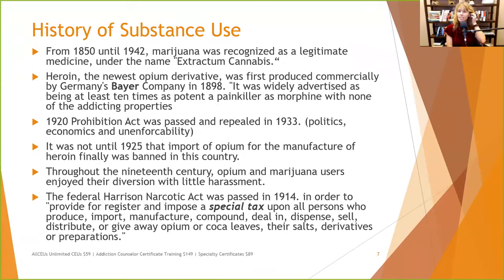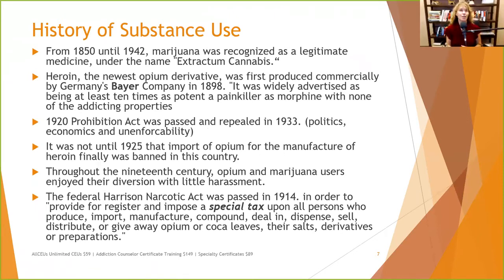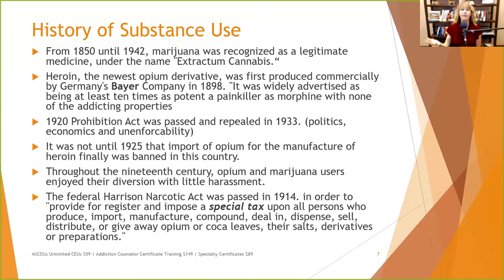From 1850 until 1942, marijuana was recognized as a legitimate medicine under the name extractum cannabis. Even from 1500 through 1942, cannabis was relatively legal and had some medicinal uses. In 1898, the Bayer Corporation found heroin as the newest opium derivative and widely advertised it as at least 10 times as potent a painkiller as morphine with none of the addicting properties. So now there was this more powerful drug coming on the market, and people who found relief in morphine found a lot more in heroin.